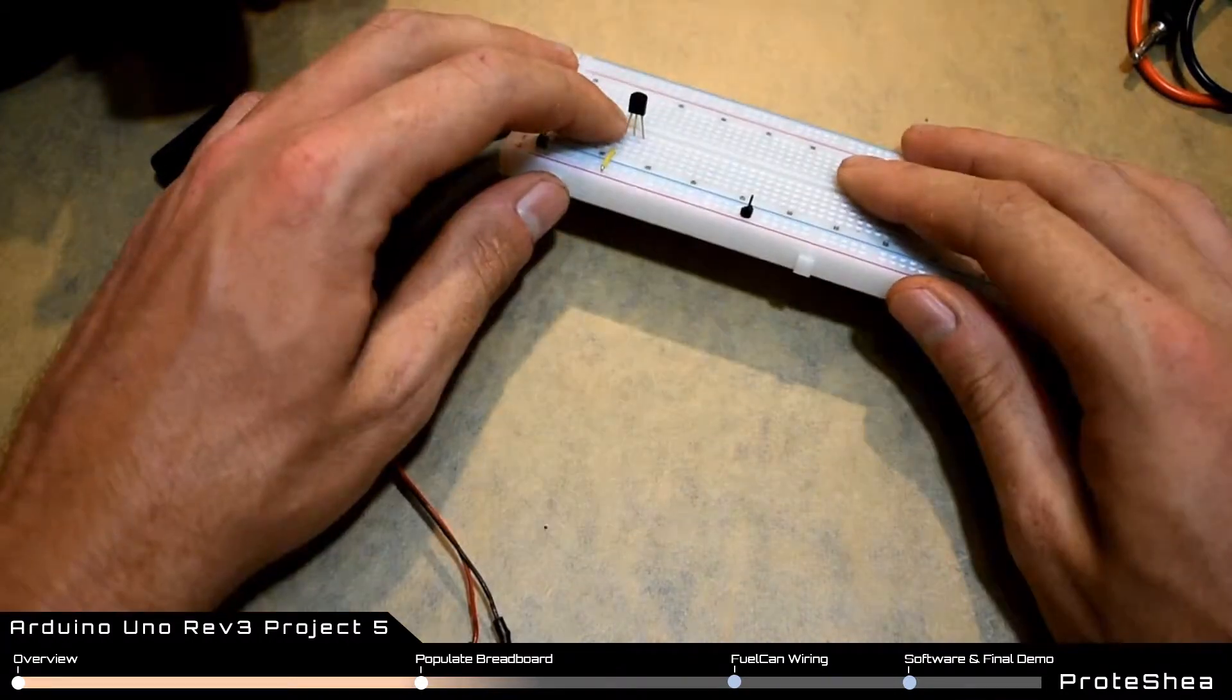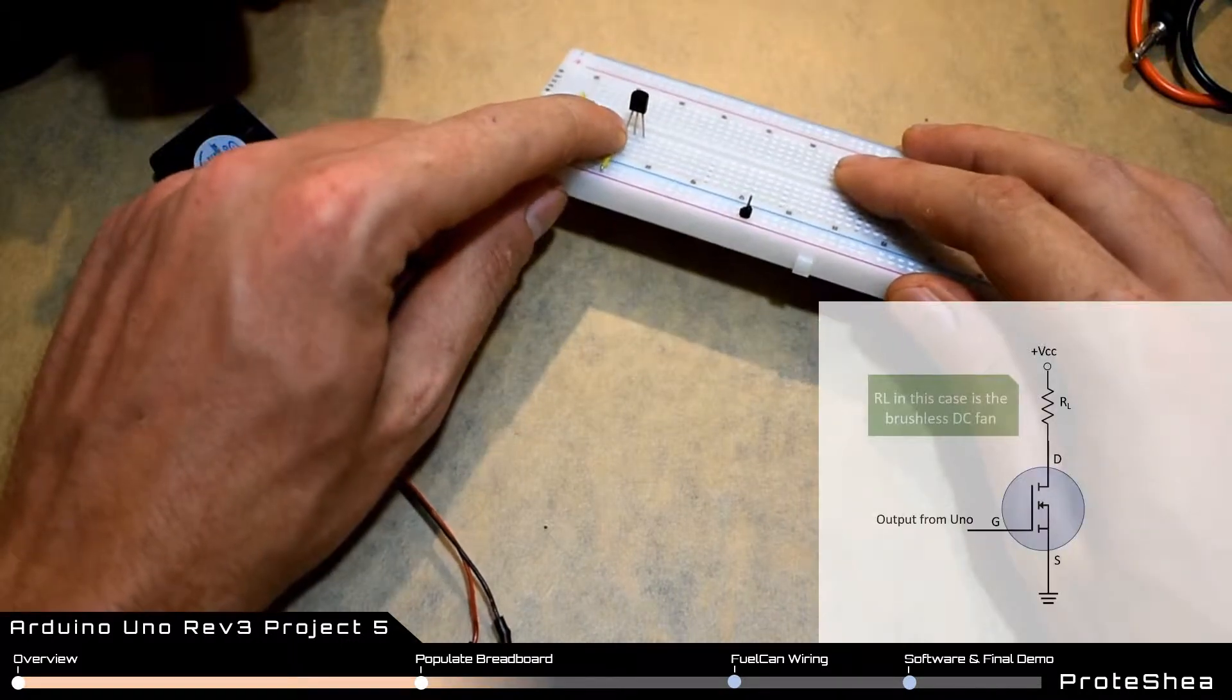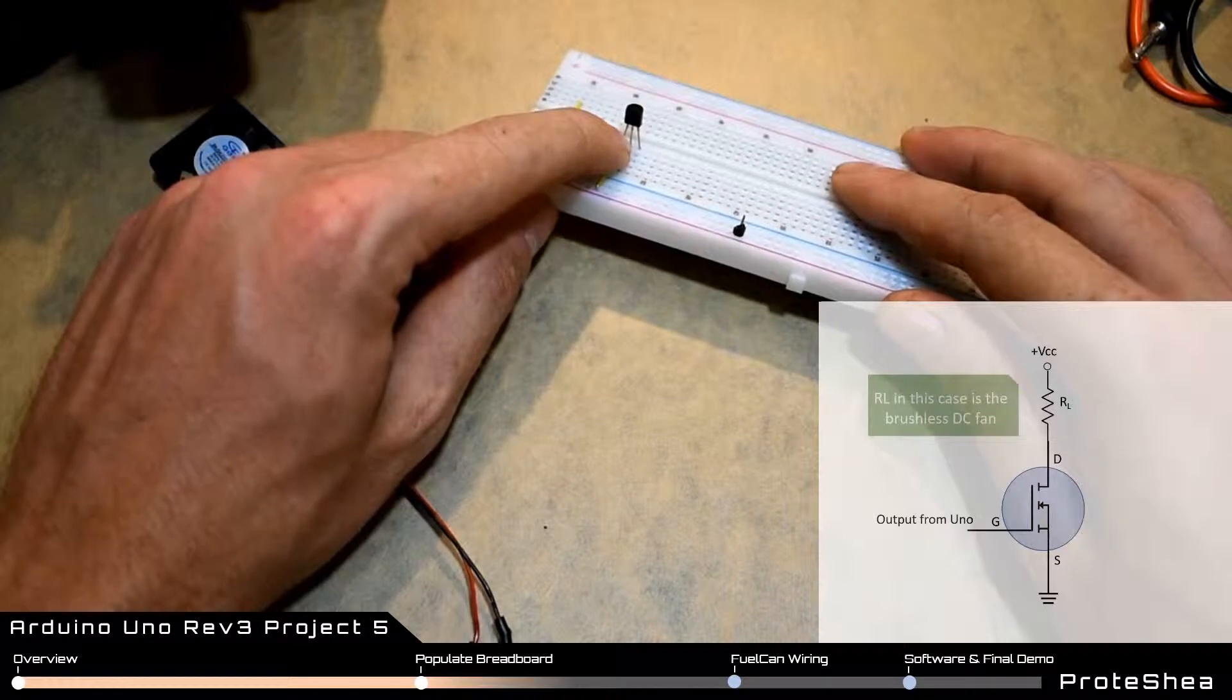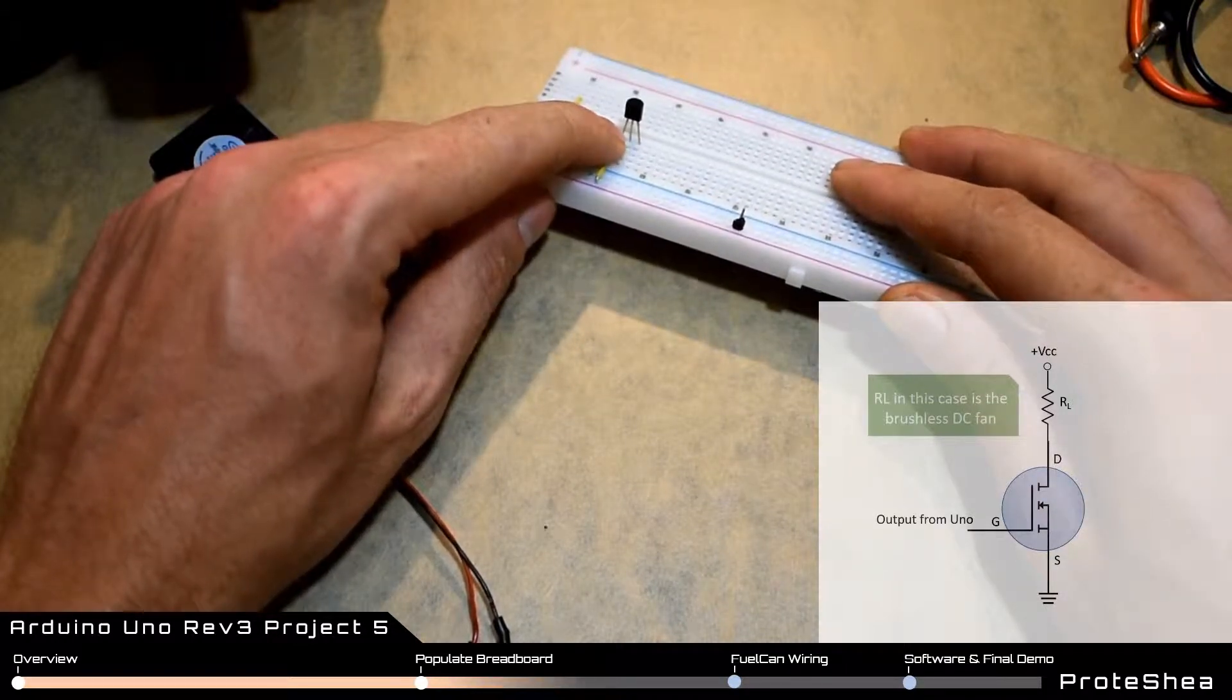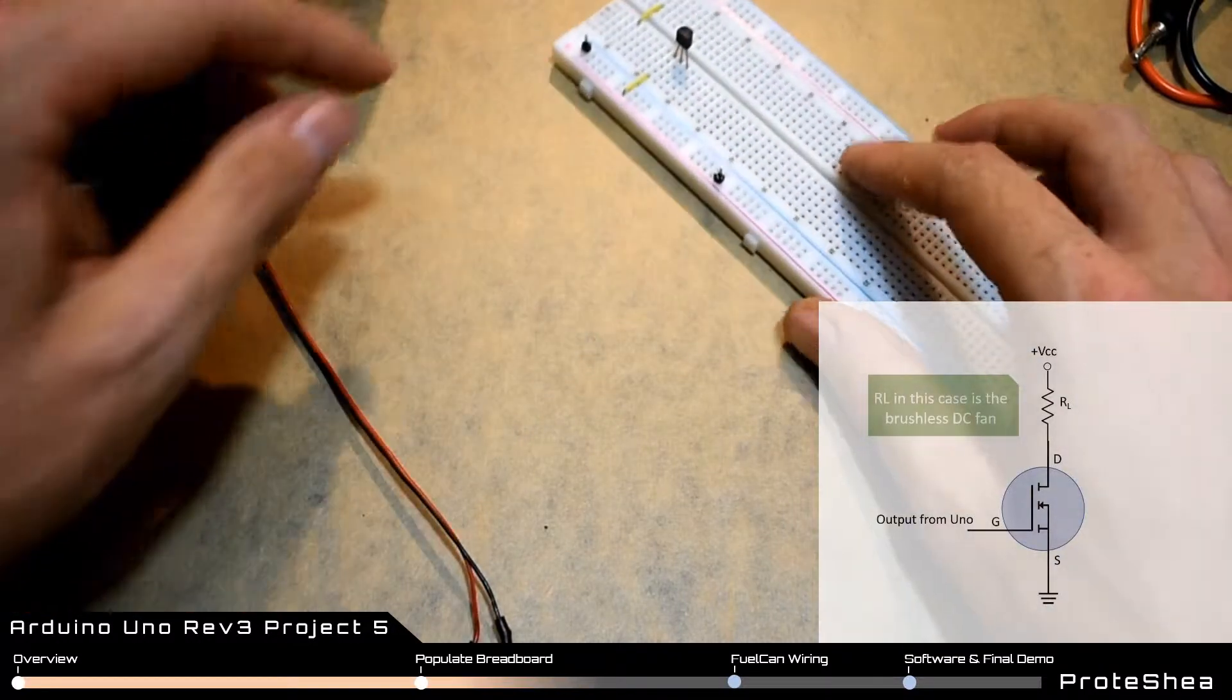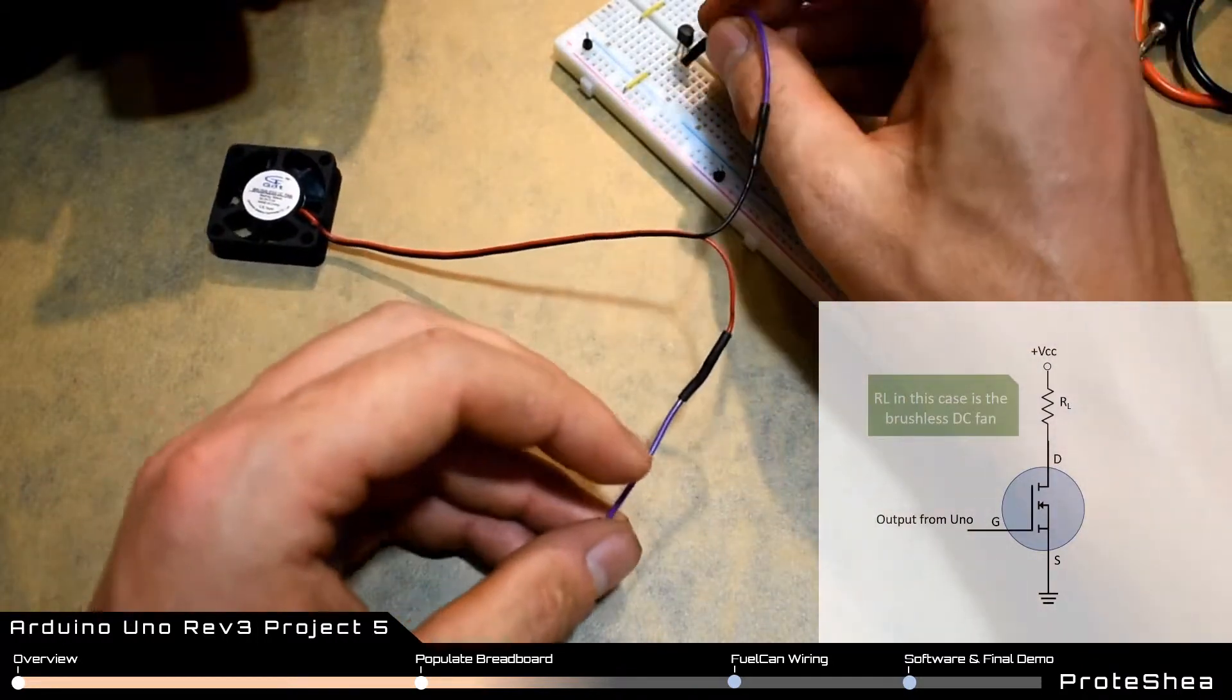Looking at the front face of the MOSFET, the source pin is on the left, and we want to ground that pin. The middle pin is the gate voltage—that's what we're controlling with the Arduino UNO. The drain pin is where we connect one of the pins of the DC fan.